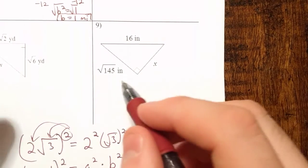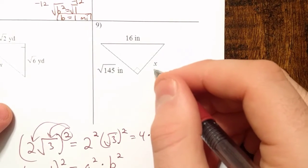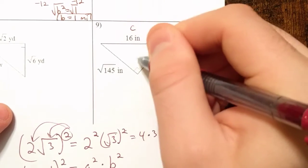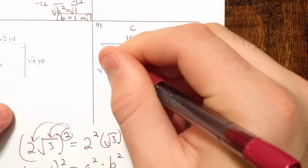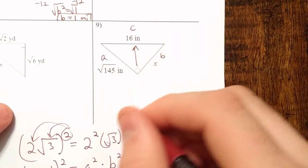So let's try number 9. We'll identify our hypotenuse as 16. It's across from the right angle. And these two will be our legs, A and B.